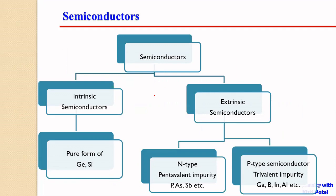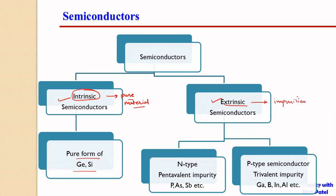Semiconductors can be of two major types: one is intrinsic semiconductors and second is extrinsic semiconductors. Intrinsic semiconductors are pure materials — no doping, no impurities present, 100% pure. Pure forms of germanium and silicon form intrinsic semiconductors. Extrinsic semiconductors have a very small, controlled amount of impurities added, depending on whether we have a pentavalent or a trivalent impurity.